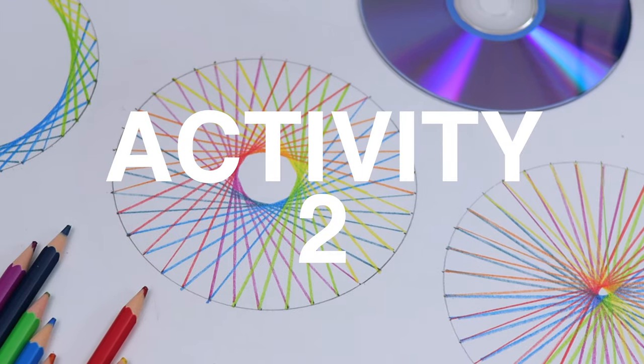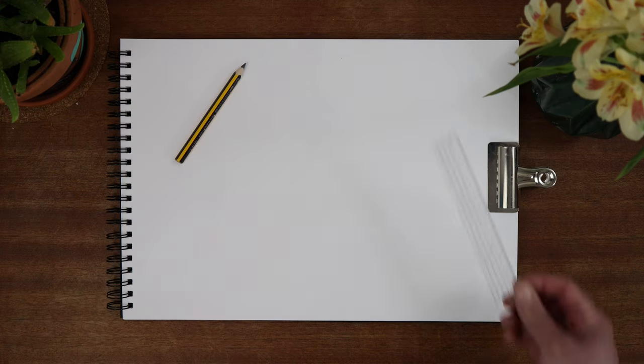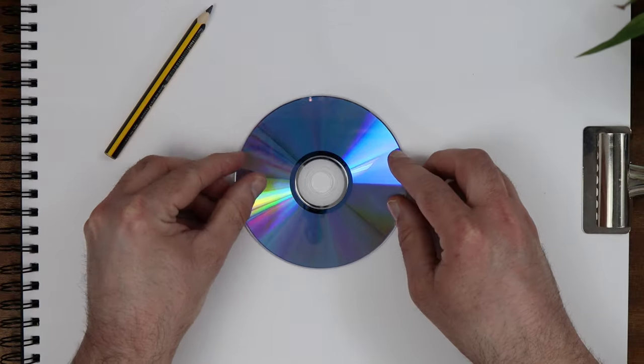So for this activity we're going to make a parabolic circle which is where you create a curve using straight lines. You'll need a pencil, a ruler, your colors and an old CD or DVD.